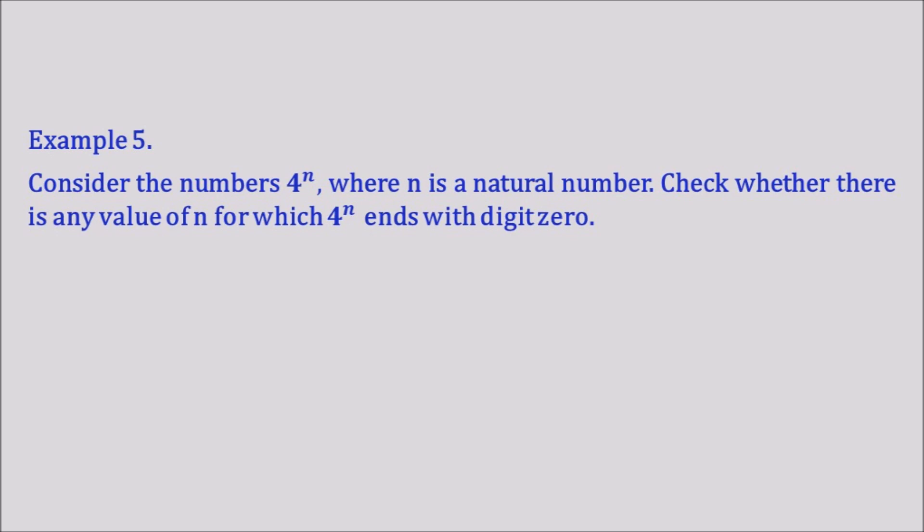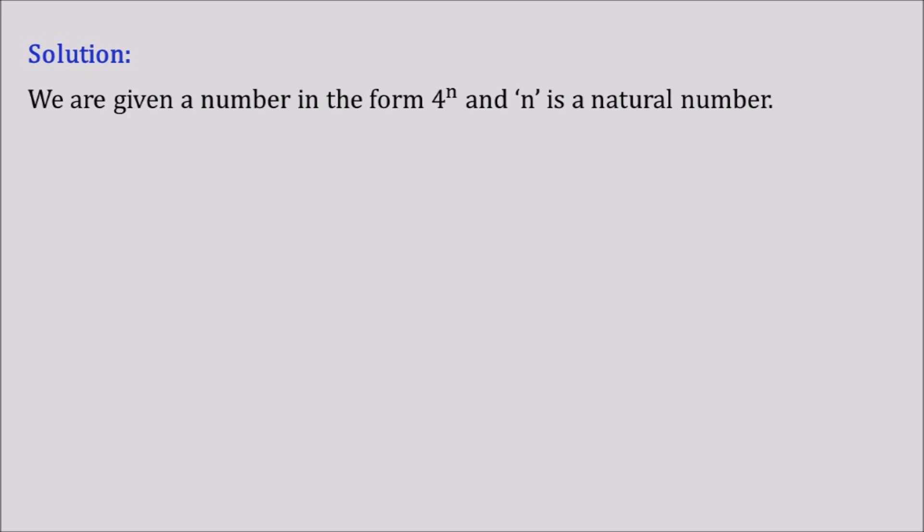The question is: Consider the numbers 4^n where n is a natural number. Check whether there is any value of n for which 4^n ends with digit zero. That means we need to find if 4^n, whatever the value of n, has a zero at the units place. Let's move ahead and solve this question.